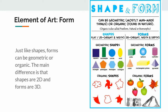Form, just like shape, can be broken into two categories. Shapes can be geometric and organic, and forms can also be geometric or organic. The only difference is shapes are 2D and forms are three-dimensional.